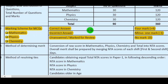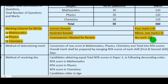Now, what will be the marking scheme for the exams? For every correct answer you will get 4 marks. Every incorrect answer gives you a negative 1 mark. And if you leave the question unanswered or marked for review, you get no marks. So be very careful — if your answer is wrong, you will receive a negative mark.